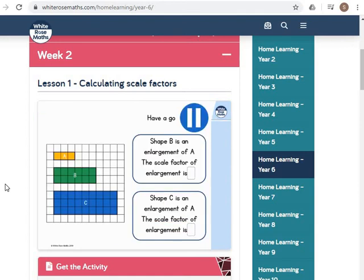See if you can have a go. Pause the video. Let's have a look at the first one. Shape B is an enlargement of A. The scale factor of enlargement is... Well, let's have a look at that top length. We can see the top length is three, and the same for B, the top length is six. The width of A is one, the width of B is two. I can see that each of those lengths has been increased by a scale factor of two.